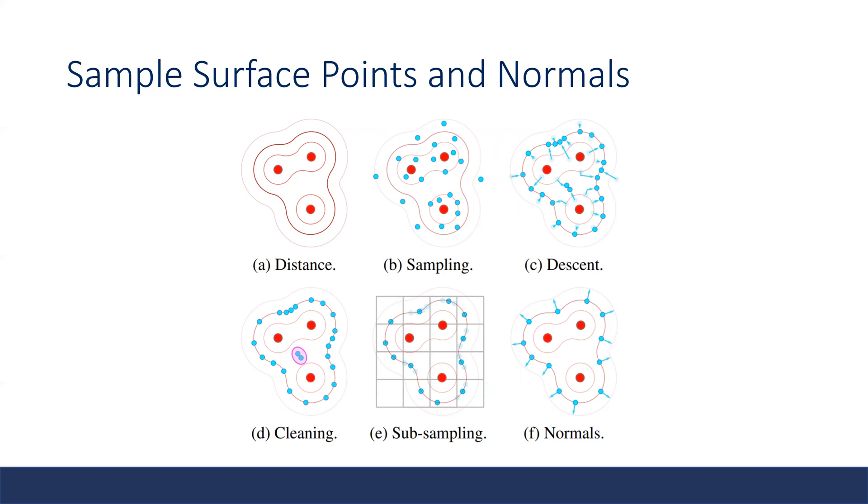In the next step, we clean the points inside the proteins by computing the SDF value of each point. Then it divides the space into several cubic bins and keeps only one surface point inside each cell. Finally, after we've got all the surface points, we compute their normals based on the gradient of the SDF.